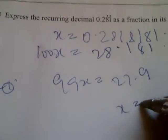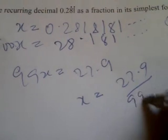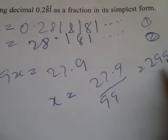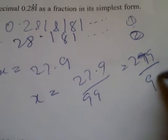so your x will be 27.9 over 99, which is going to give you 279 over 990.